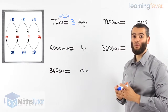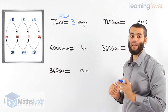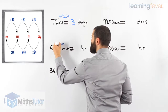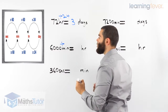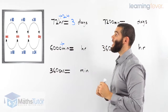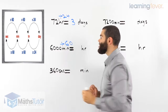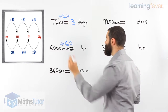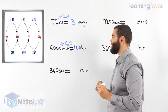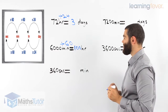Here we have minutes to hours. 6,000 minutes — we want to know how many hours that is. We're going from minutes to hours, so we are dividing by 60. 6,000 divided by 60 is 100 hours. There are 6,000 minutes in 100 hours.